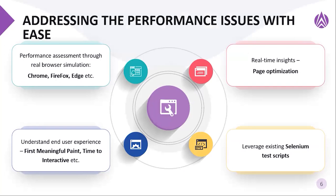We would have the error percentage indicated in the metrics for each of the business scenarios involved in the test. The error percentage would help the team to know the metrics and the details of the requests which are getting errored out. The framework captures the details of each of the errors for each of the requests involved in the network traffic.